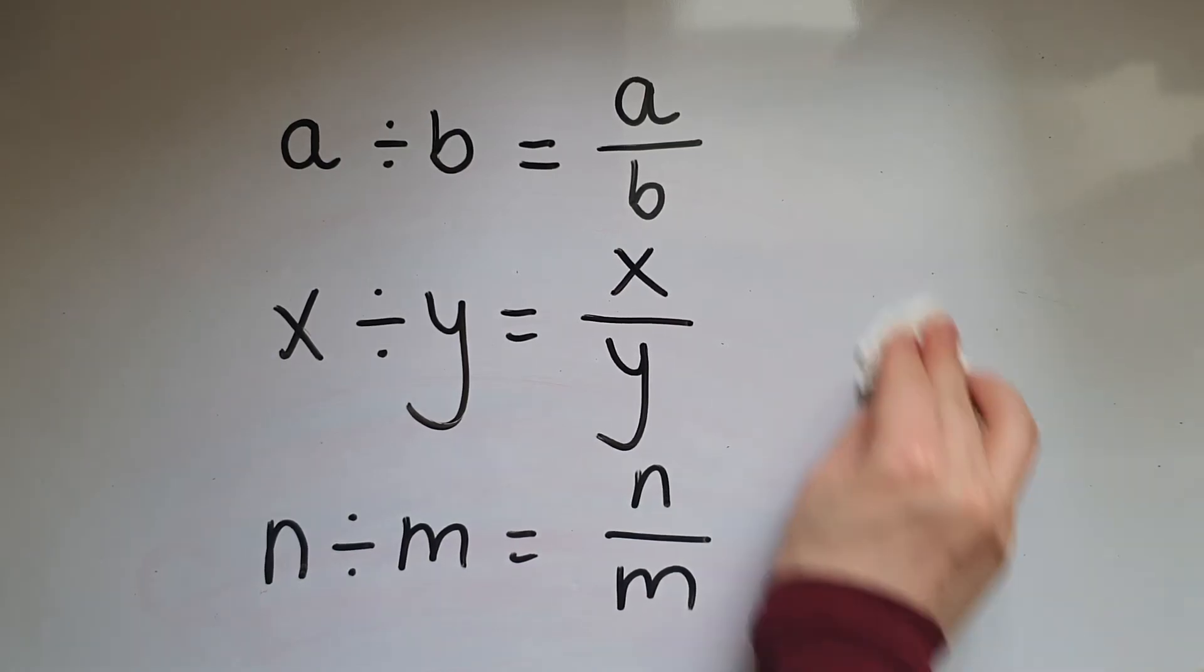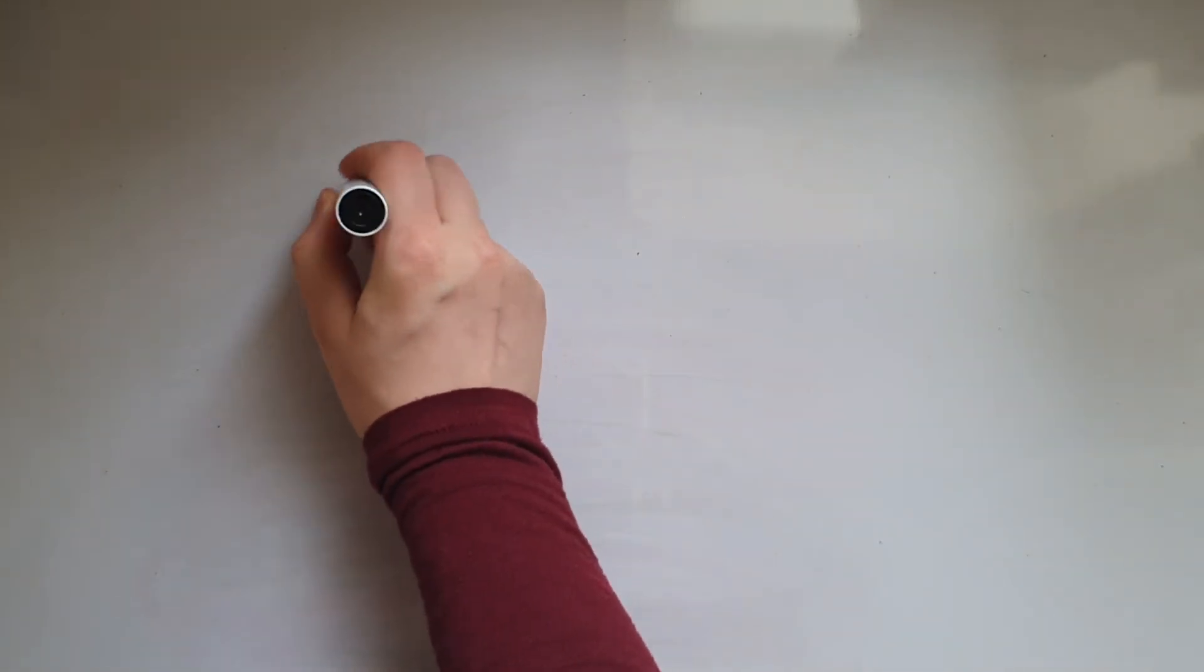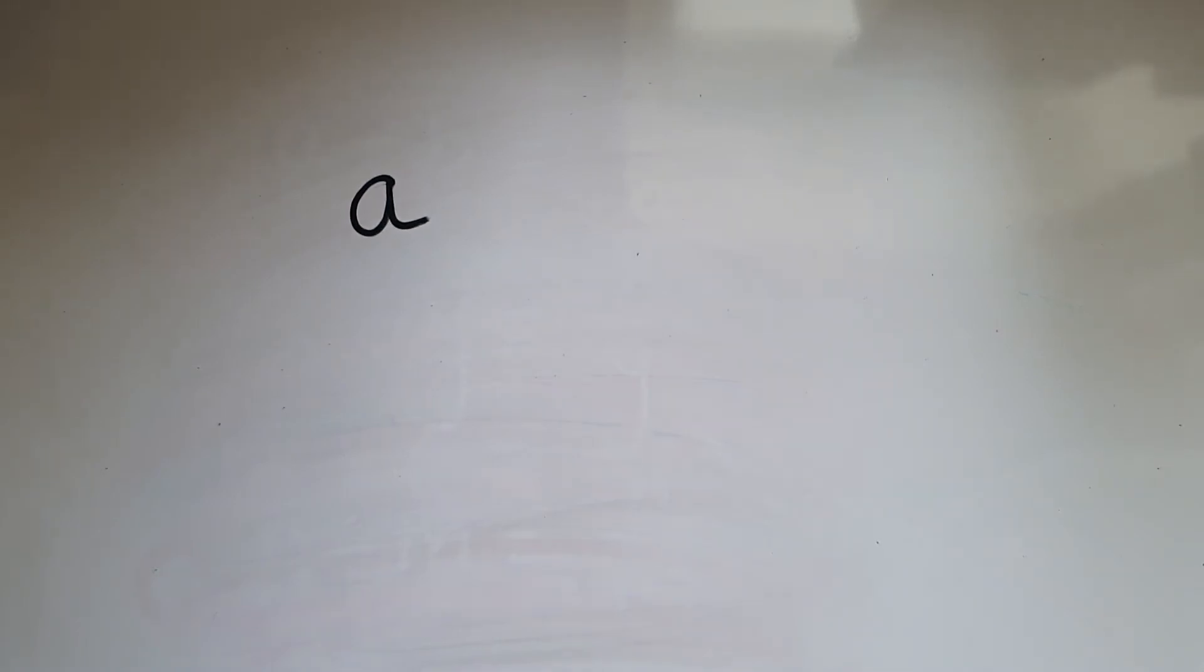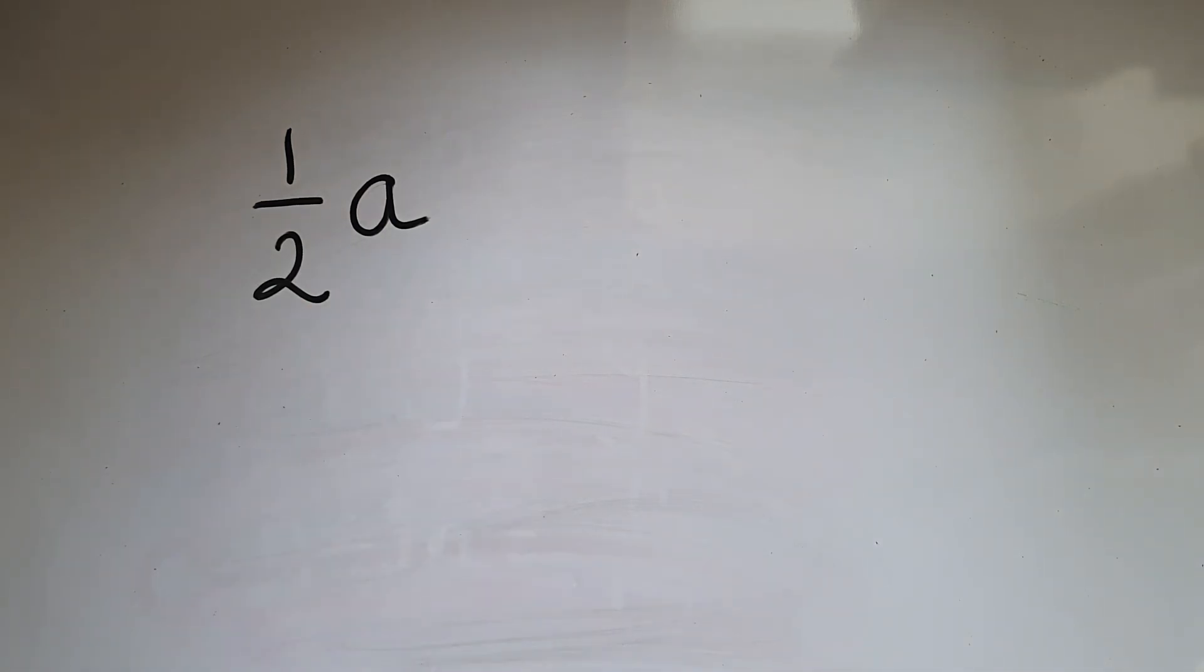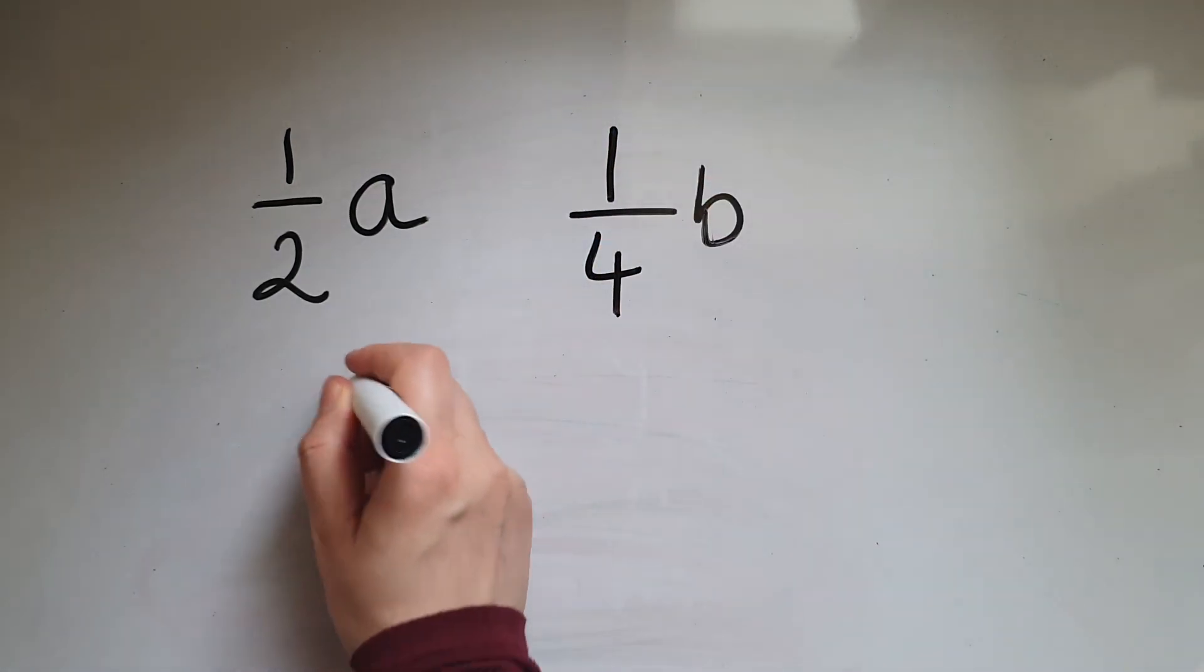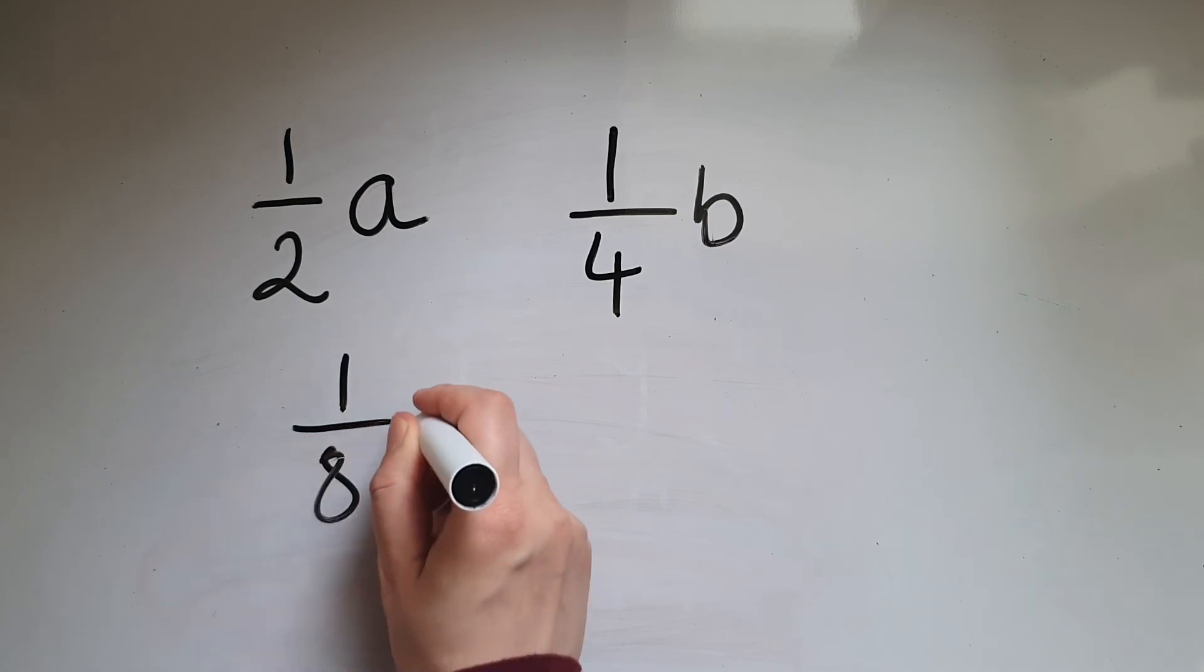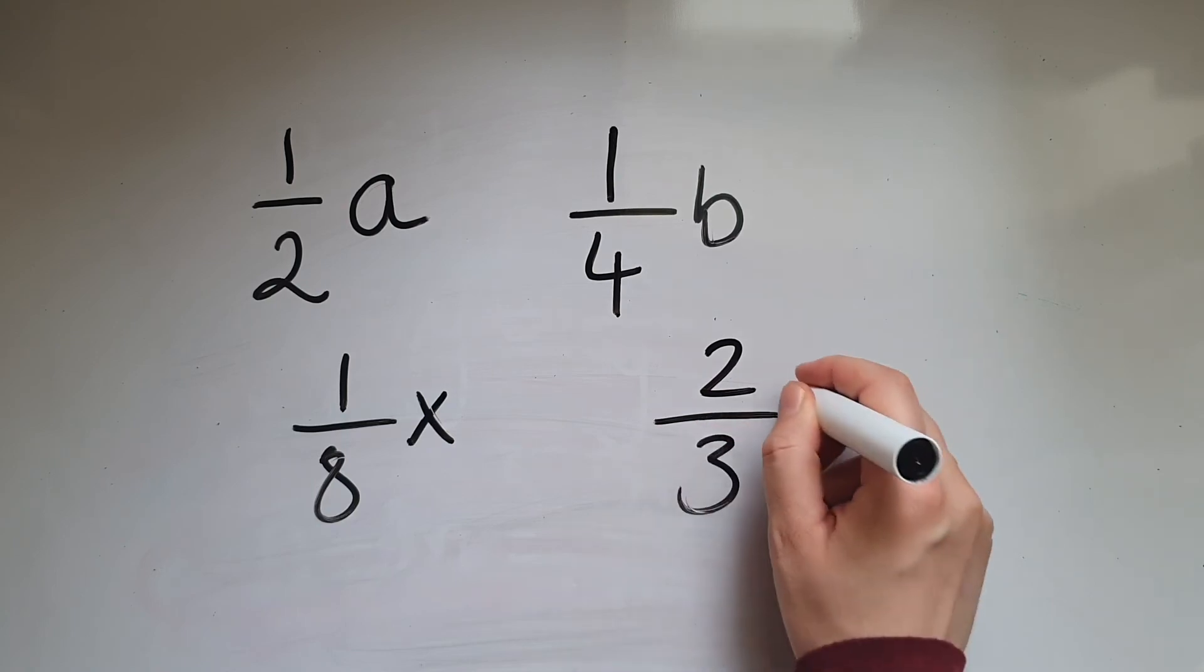Also, when it comes to a fraction of something, I've eaten half an apple. So, apple denoted with A. I'm going to write 1/2 of A, not 0.5 A. So, we use the fraction in front of the letter. Quarter B. 1 eighth of X. 2 thirds of Y.